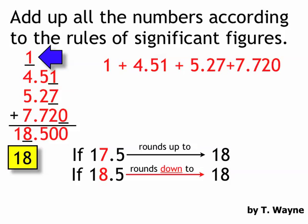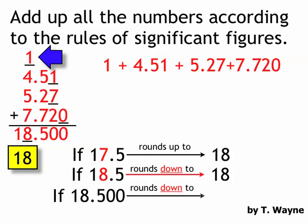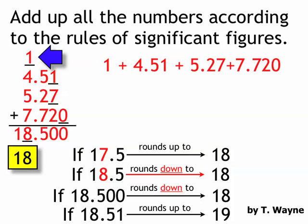So for example, if the number was 18.500, that would also round down to 18. But if the number was, say, 18.51 or 18.5001, that would round up. If there's anything after that 5, to the right of that 5, it's going to round up to 19.